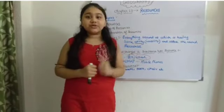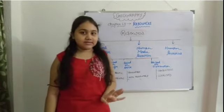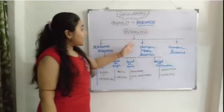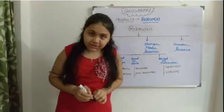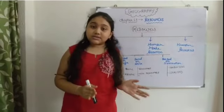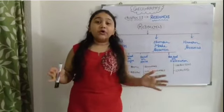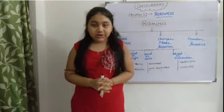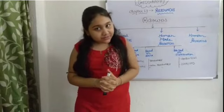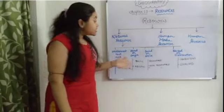Now we will learn about the classification of different types of resources. Resources are mainly classified into three categories: number one, natural resources; number two, human-made resources; and number three, human resources. Natural resources are the resources we directly get from nature and use in their original form — no changes are made. For example, water, air, and sunlight are all natural resources.